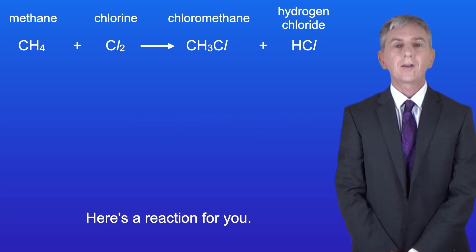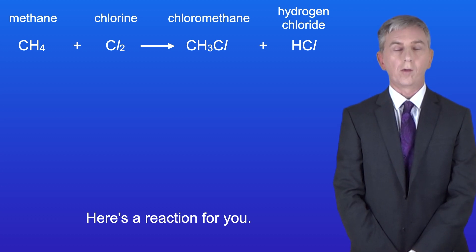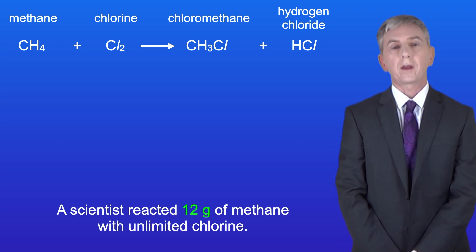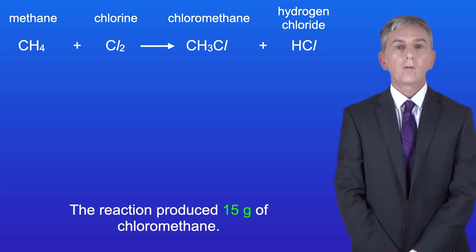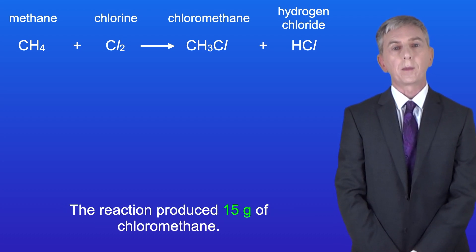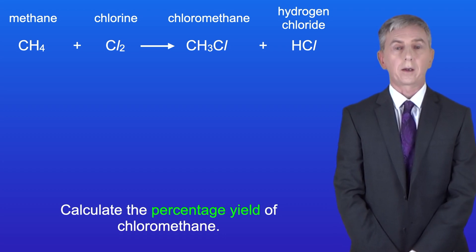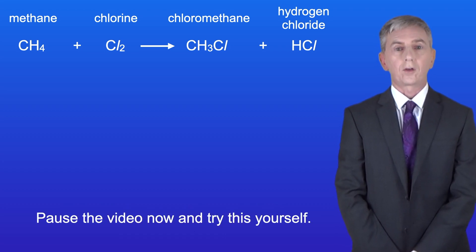Here's a reaction for you: methane plus chlorine makes chloromethane plus hydrogen chloride. A scientist reacted 12 grams of methane with unlimited chlorine. The reaction produced 15 grams of chloromethane. Calculate the percentage yield of chloromethane. Pause the video now and try this yourself.